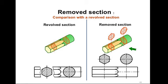Here, what we have done: we have overlapped in revolved section, kept it on the previous view. But in removed section, we have kept aside the hexagonal view and the circular cut section — just keeping them aside. So this is called removed section. Removed section means we are going to keep it away. The name itself tells you: removed section means we are going to keep aside.